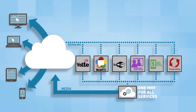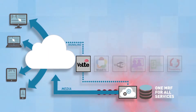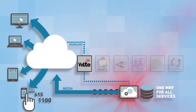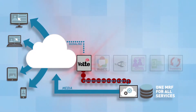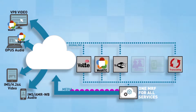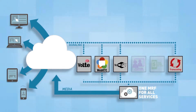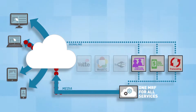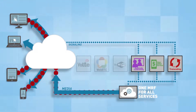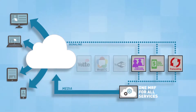Examples of media processing using a OneMRF strategy include playing audio and video prompts and collecting digits for voice over LTE services; transcoding between WebRTC, voice over LTE, and over-the-top communication services; or the mixing and transcoding of audio and video streams for multimedia conferencing, collaboration, and other value-added services.